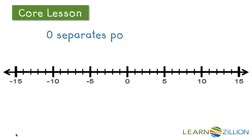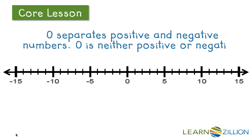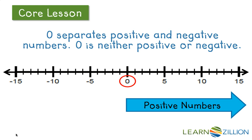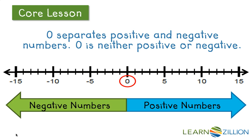On a number line, 0 separates positive and negative numbers. 0 is neither positive or negative. Positive numbers go to the right of 0, and negative numbers go to the left.